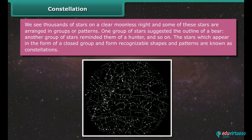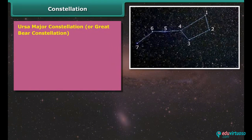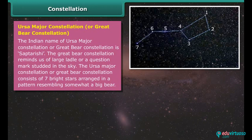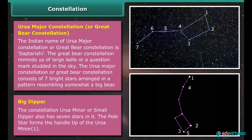Ursa Major Constellation, or Great Bear Constellation. The Indian name of Ursa Major Constellation is Saptarishi. The Great Bear Constellation reminds us of a large ladle or a question mark studded in the sky. The Ursa Major Constellation consists of seven bright stars arranged in a pattern resembling somewhat a big bear. The constellation Ursa Minor, or small dipper, also has seven stars in it. The pole star forms the handle tip of the Ursa Minor.